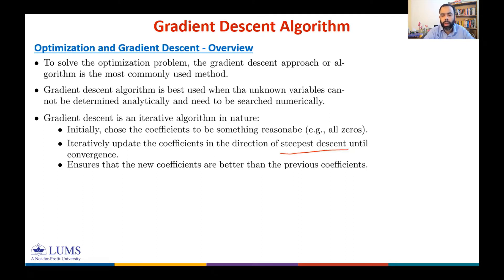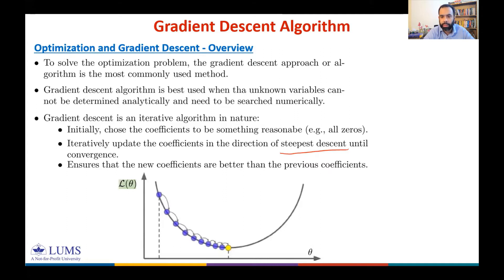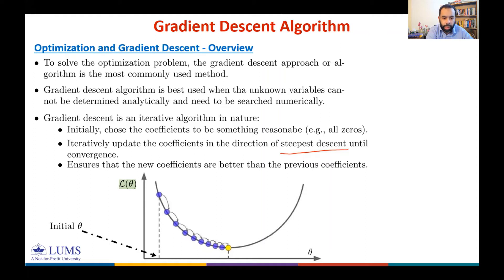Let me explain with a simple one-dimensional loss function where you have only one variable θ and a smooth loss function. We choose an initial θ and move toward the yellow point — the optimal θ for which the loss function is minimized. Our goal is to reach this yellow point starting from the initial θ.